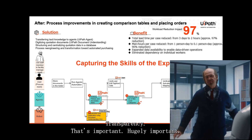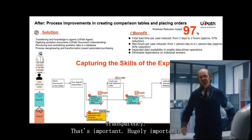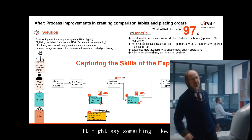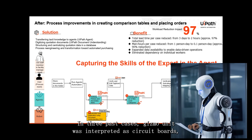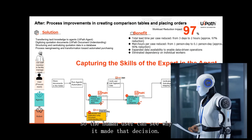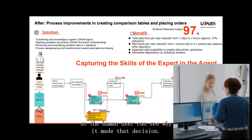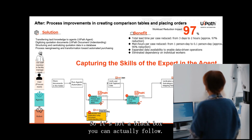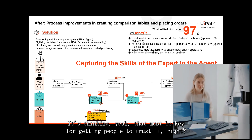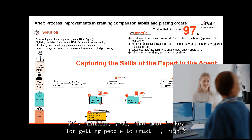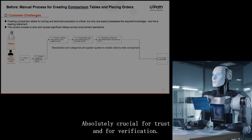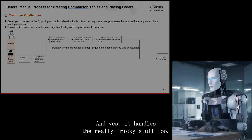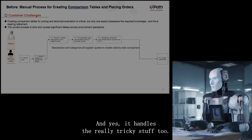Crucially, the agent provides its reasoning — it doesn't just spit out an answer. It might say something like, 'in three past cases, gizmo unit was interpreted as circuit boards,' so the human user can see why it made that decision. It's not a black box; you can actually follow its thinking. That transparency is hugely important for trust and for verification.